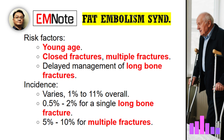A big risk factor is prolonged conservative management of long bone fractures — delaying surgical stabilization gives more time for fat to disseminate. Early fixation is key. Early stabilization is protective. The reported incidence varies, but recent studies suggest an overall incidence between 1% and 11% in trauma patients. With an isolated long bone fracture it's lower, maybe 0.5% to 2%, but with multiple fractures, especially involving the pelvis, the incidence jumps to maybe 5% to 10%. In high-risk groups, it's definitely something you need to anticipate.